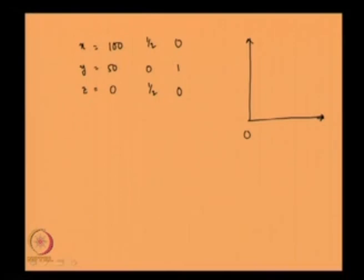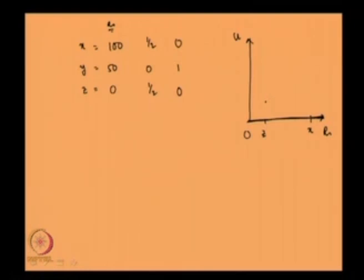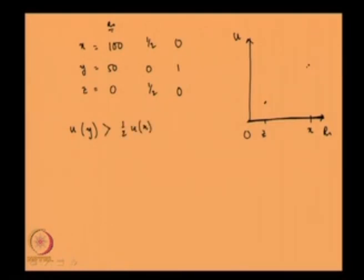Along this axis we are representing the amount — think of 100 as the amount of money in rupees — and on the other axis is the utility that the player is getting from having that amount of money. Suppose 0 is Z and 100 is X. In general, if a person is getting more money, he is getting more utility, which is why X is preferred to Y. The question is what shape the utility function takes. Suppose it so happens that U(Y) is greater than half of U(X) plus half of U(Z), meaning the person is liking the certain outcome Y.